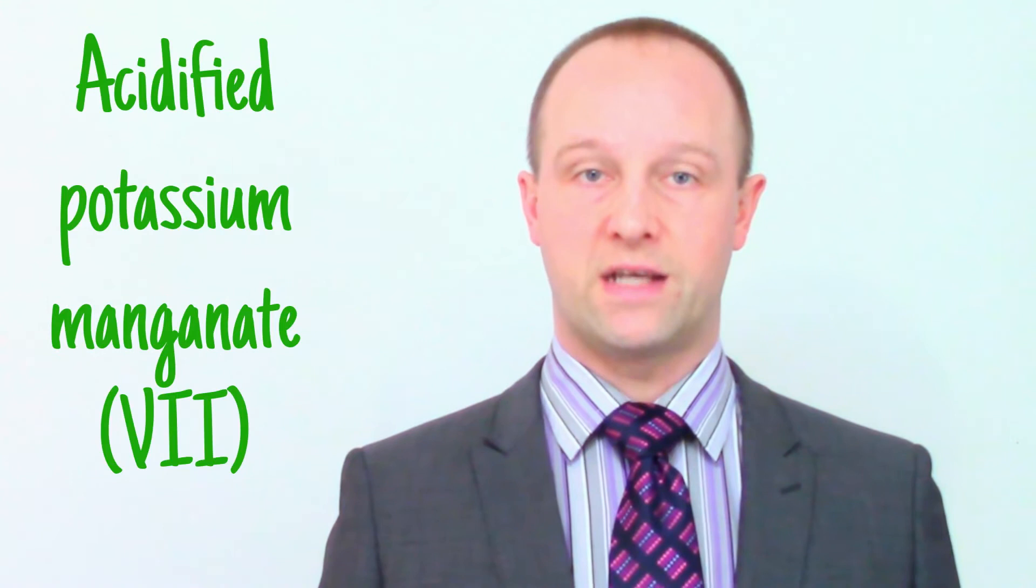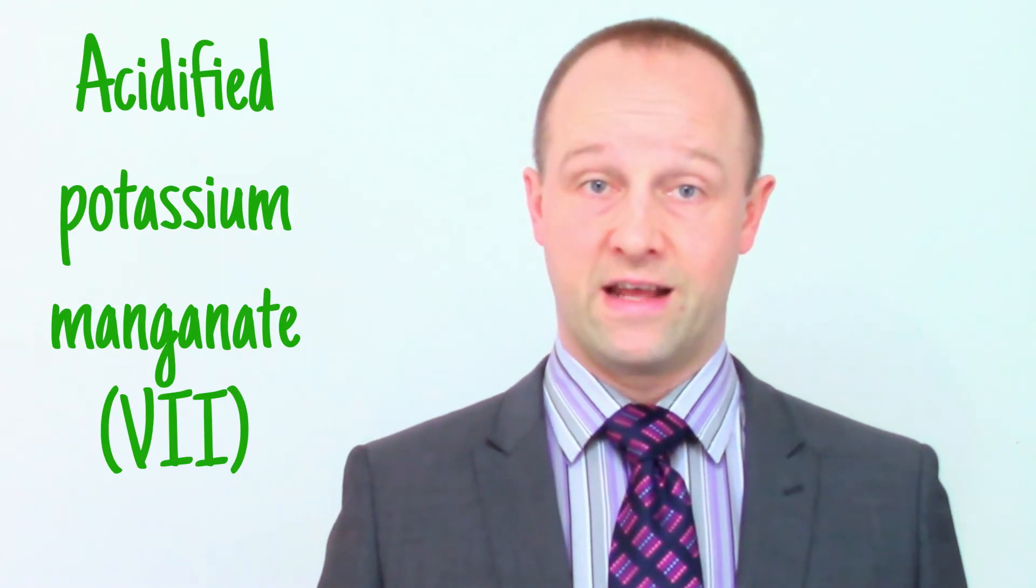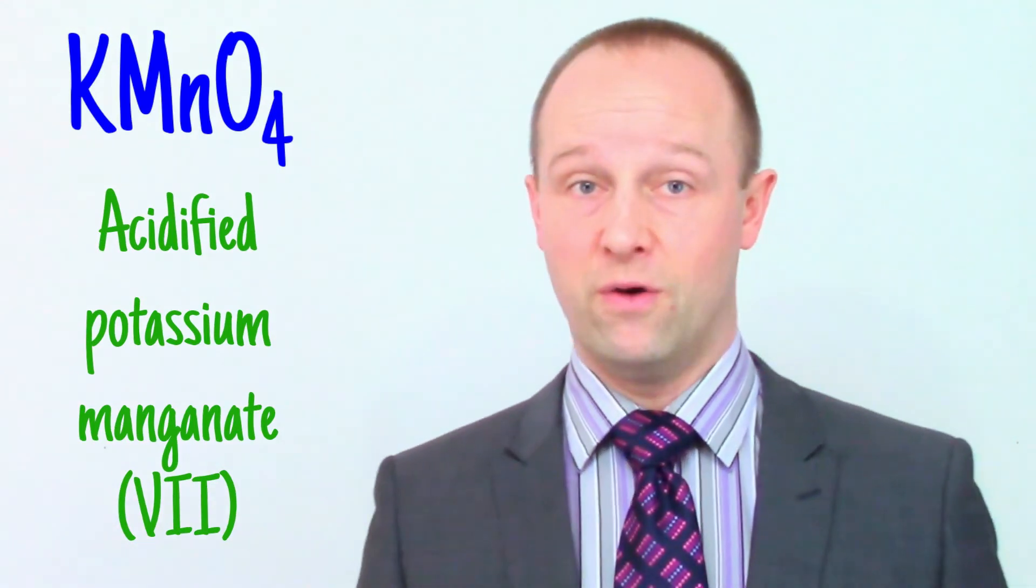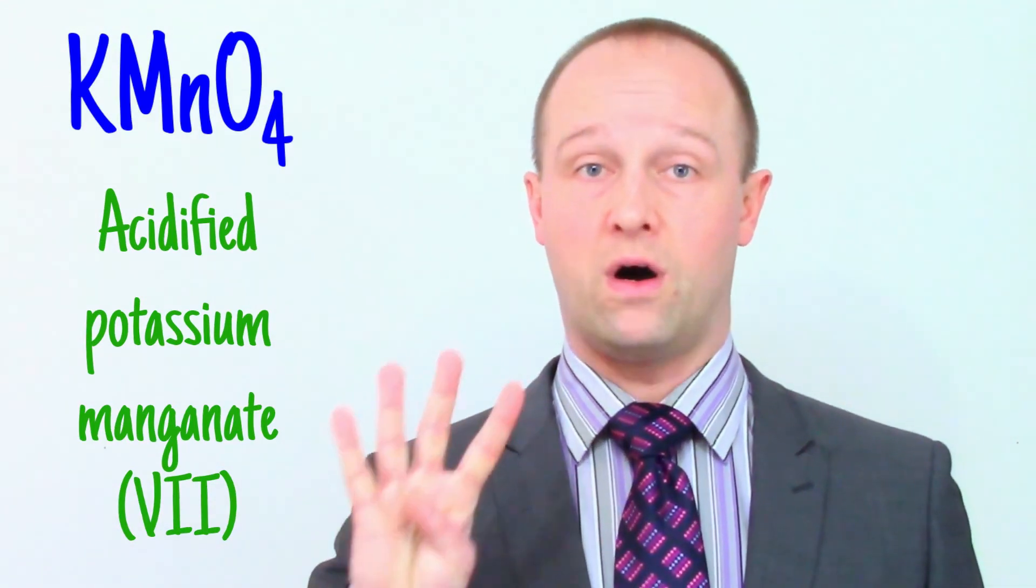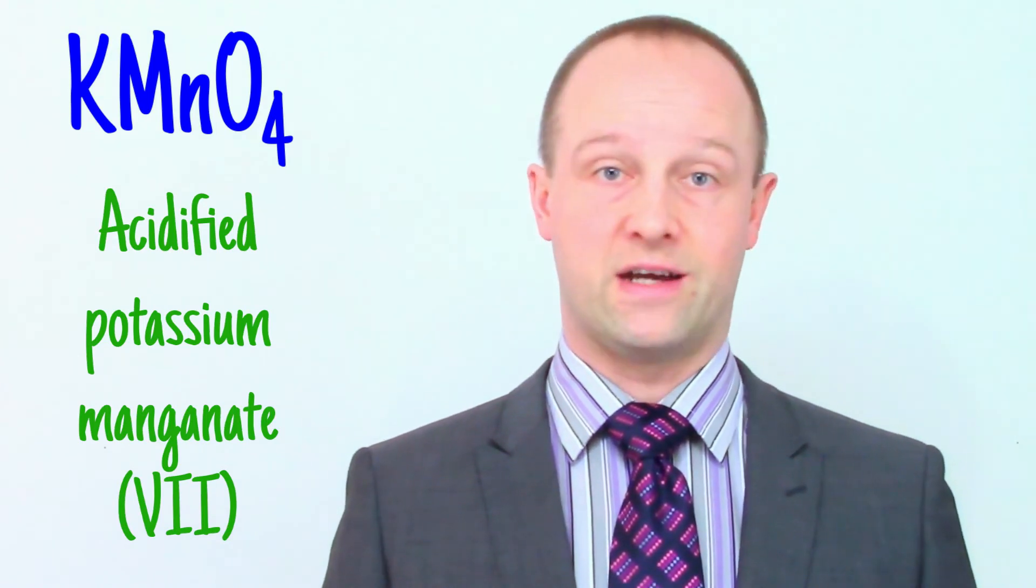The one usually used is a colorless solution called acidified potassium manganate 7. All you really need to know about it is that in its formula, KMnO4, there are four oxygen atoms just waiting to join our ethanol molecules and oxidize them. So, now we know what a carboxylic acid is and how it's formed.